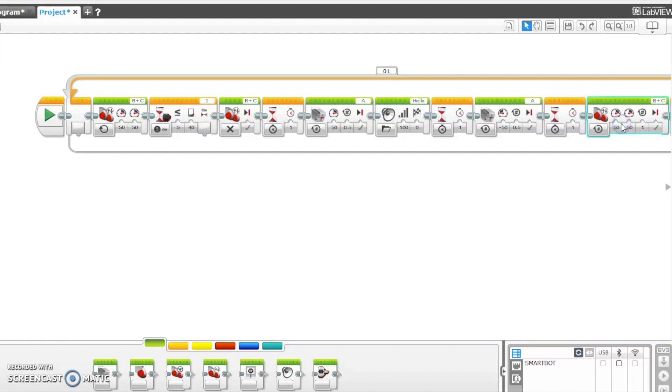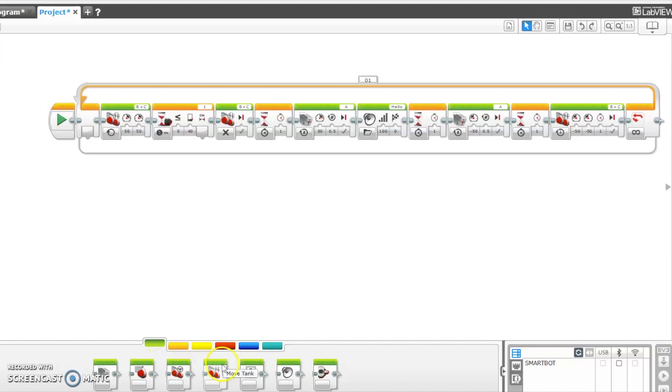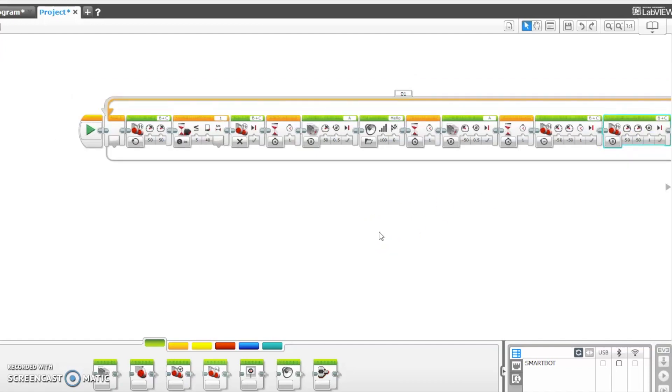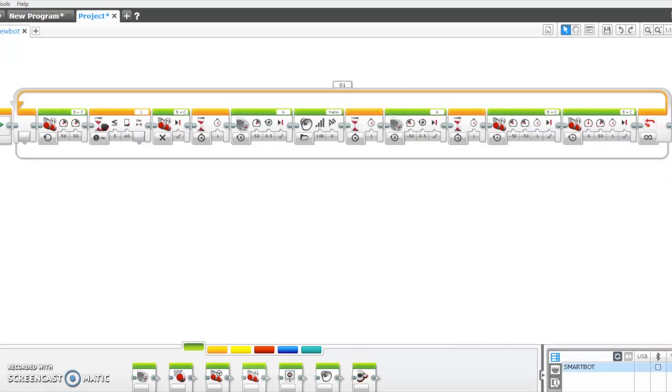Now we will put another Move Tank block that helps the robot to move backwards. Now we will use another Move Tank block that helps the robot to steer at the left. All these blocks are in a loop so that the robot moves forever until we switch it off.